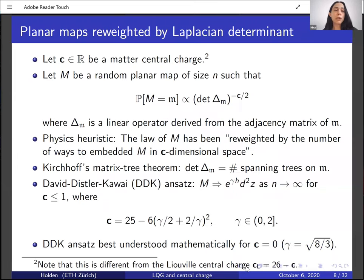So far in the talk, we have been looking at uniform random surfaces. In conformal field theory and string theory in the 1980s, people including Polyakov were also interested in certain non-uniform random surfaces whose law has been reweighted by the determinant of the Laplacian. We let C be a parameter called the matter central charge, and let M be a random planar map sampled such that the probability that the map equals some fixed map m is proportional to the determinant of the Laplacian to the power −C/2. The Laplacian is a particular linear operator defined in terms of the adjacency matrix of the map.